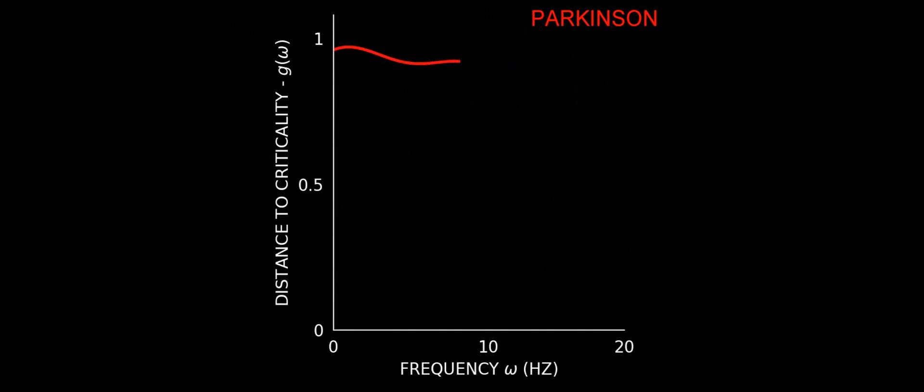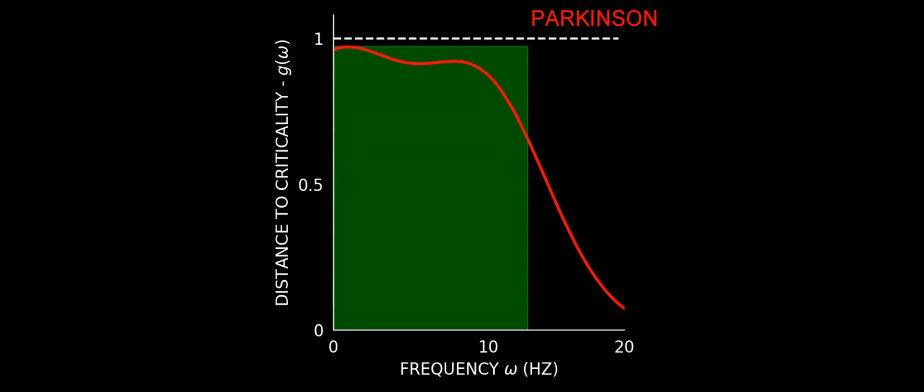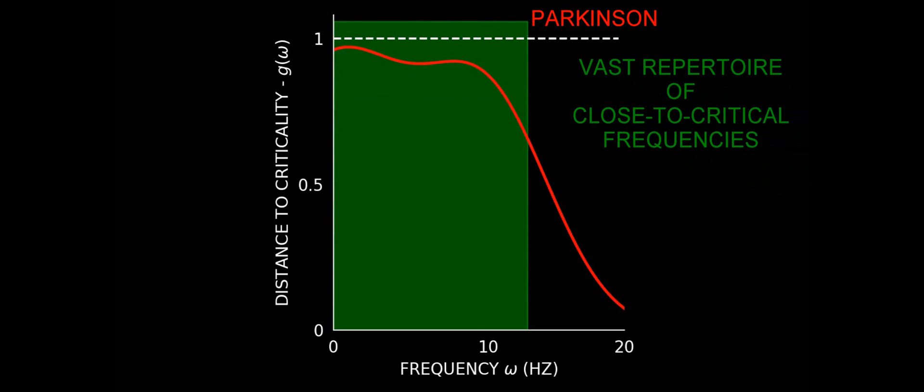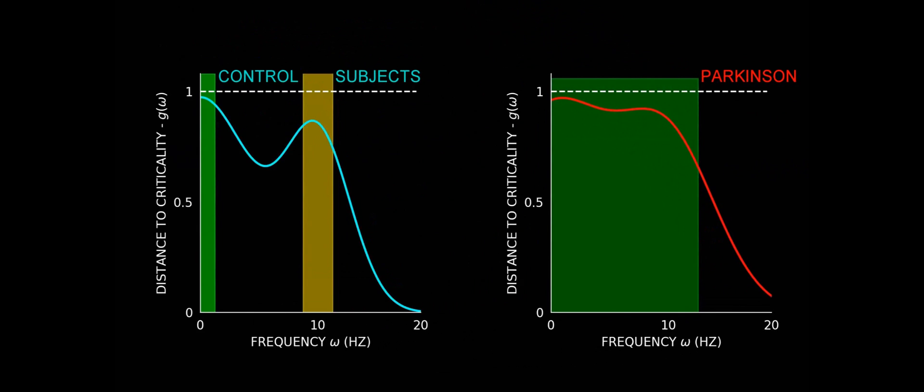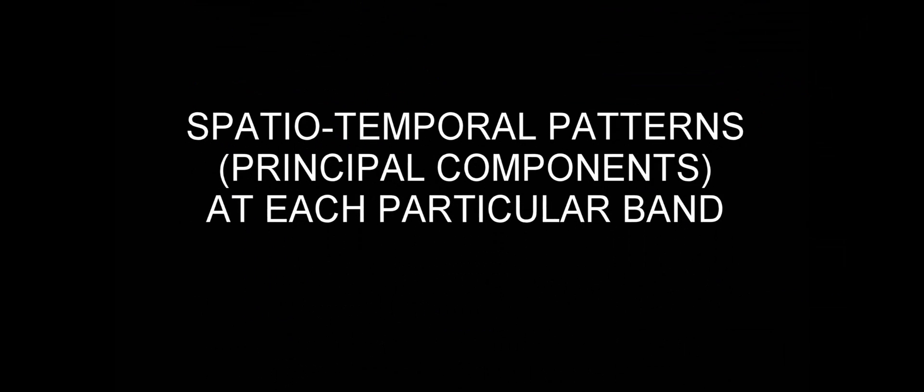On the other hand, the presence of pathologies like Parkinson has a great impact in this behavior. Indeed, these pathologies are such that there are no longer clear peaks in the distance to criticality near the alpha band, instead a vast repertoire of close to critical bands appear. Let us observe that this behavior could not have been reported just by looking at the slower time scales as previous works have done. The behavior at omega equals zero is practically the same for both groups.